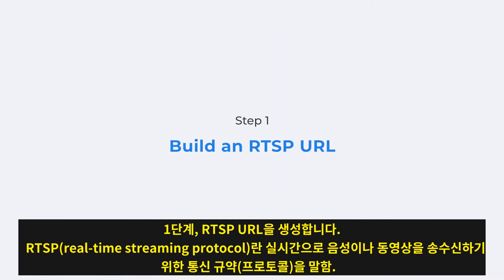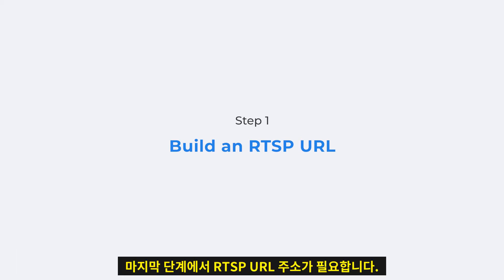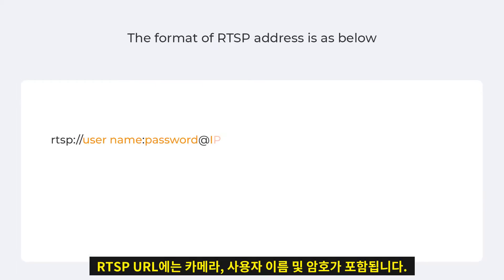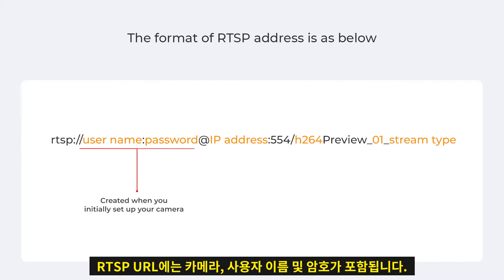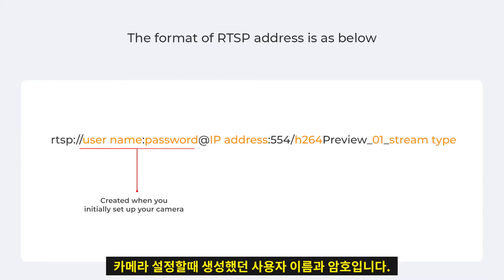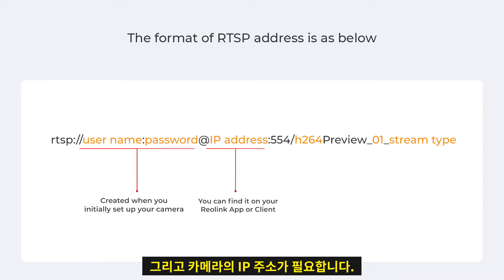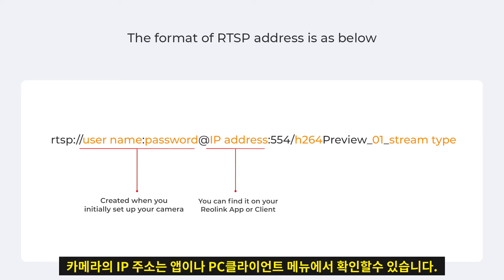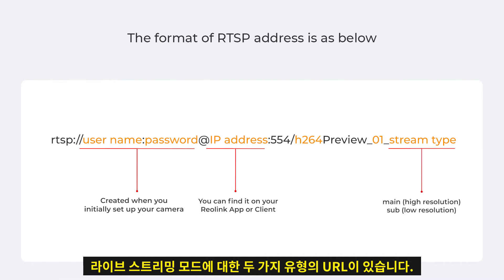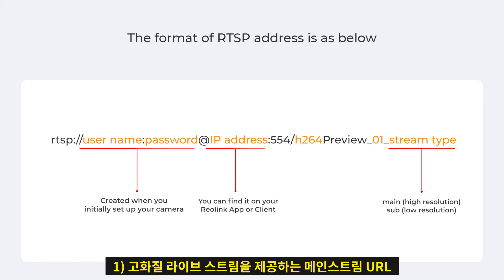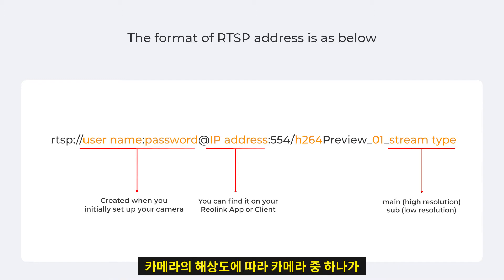What you need to do first is to build an RTSP URL, which will be required in the later steps. The RTSP URL contains the camera username and password you created when you initially set up your camera, and the IP address of your camera, which you can find on your Reolink app or client. There are two kinds of URL for two modes of live streaming: one ends with 'main' for delivering high-definition live stream, and the other ends with 'sub' for smooth live stream. Choose either one according to your camera's resolution.